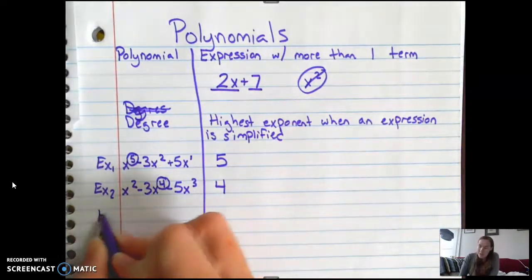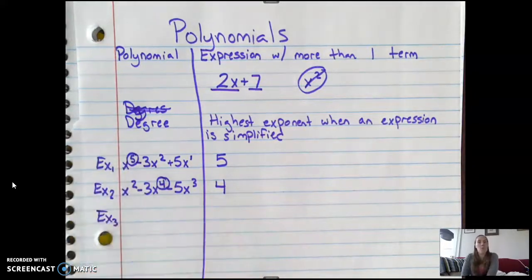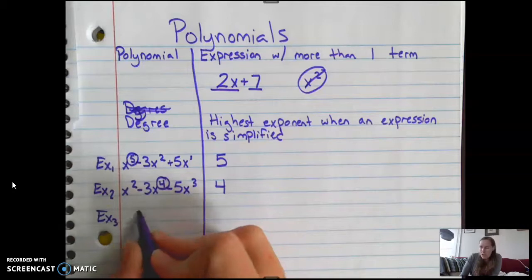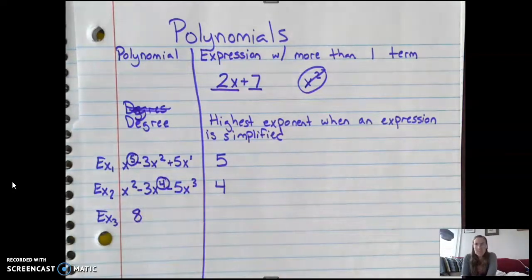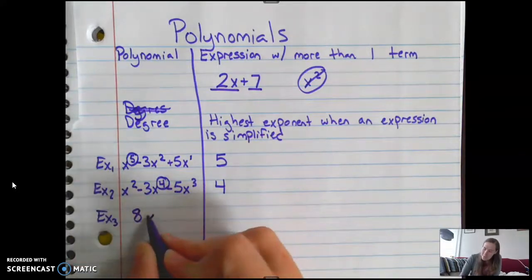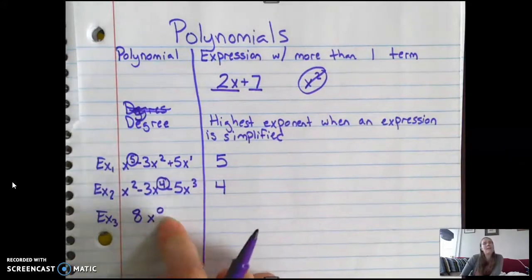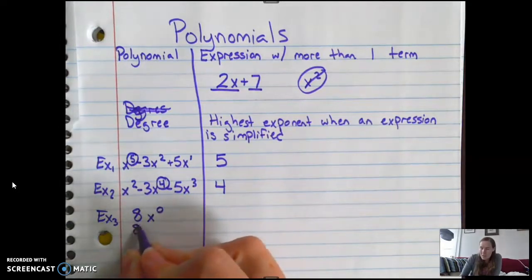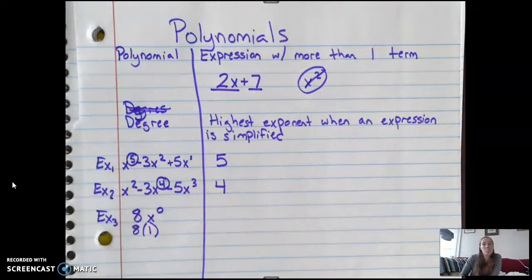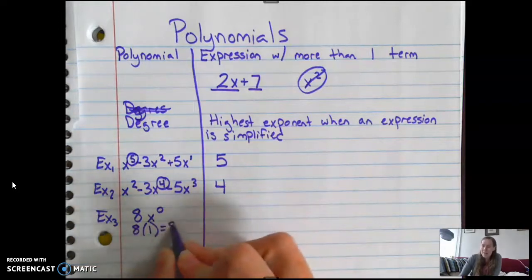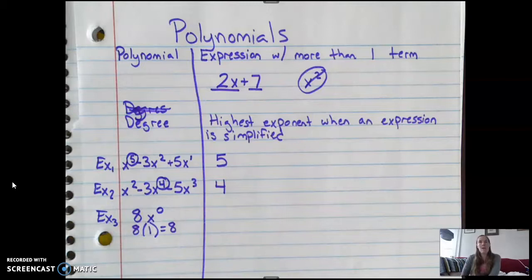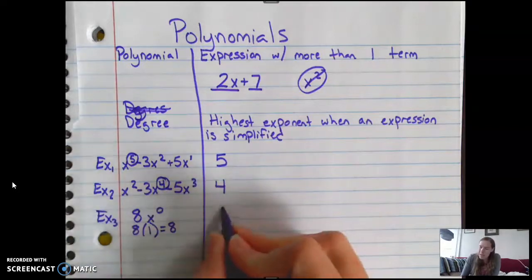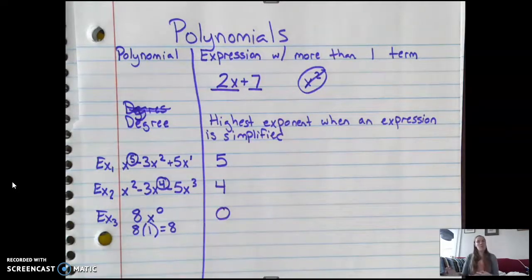The next example is not a polynomial, but it's something I want you to be aware of. Say I asked you for the degree of the number 8. Well, there's nothing there, so how do we figure it out? What if I wrote this? What is anything to the 0th power? It's 1. So technically, x to the 0th power is 1, and 8 times 1 is 8. Therefore, any lone number, whether it's a million, 8, 7, pi, whatever, the degree is always 0.